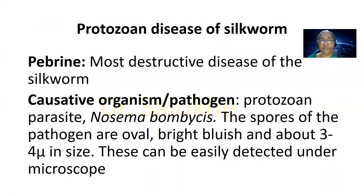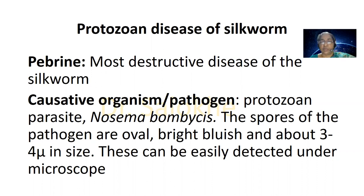Let us first deal with the protozoan disease of silkworm, also called pebrine. It is the most destructive disease of the silkworm. The causative organism or pathogen is the protozoan parasite Nosema bombycis. The spores of the pathogen are oval, bright, bluish, and about 3 to 5 microns in size. These can be easily detected under a microscope.